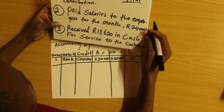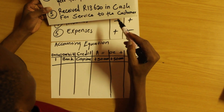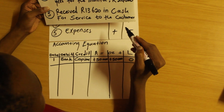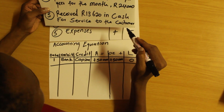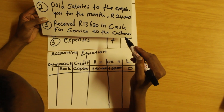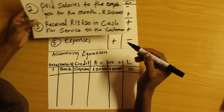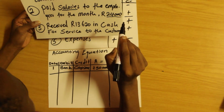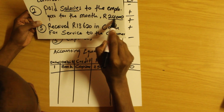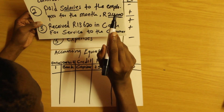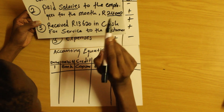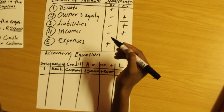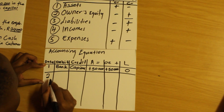Let me move to the next transaction. The second transaction says paid salaries to the employees for the month: 24,000 rand. Two accounts are affected: salaries and bank, because cash is involved.